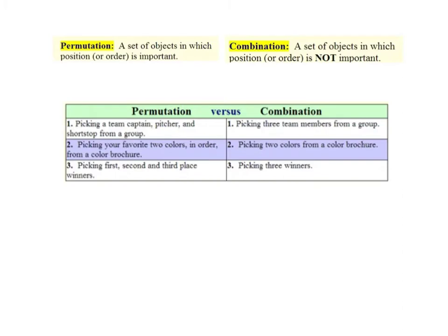The primary difference between a permutation, which is just a set of objects, and a combination, another set of objects, is that in a permutation the order is important. So this is really important, a set of objects in which the position or order is important. In a combination it doesn't matter.